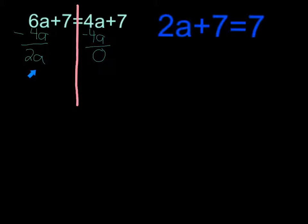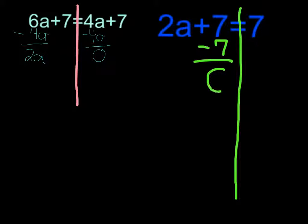So now you take 2a plus 7 equals 7. So we still want to keep them equal like a scale. And we have plus 7. So the opposite of addition is subtraction. So you do minus 7 equals 0. But you have to do it on the other side because it's a scale. So minus 7 equals 0.